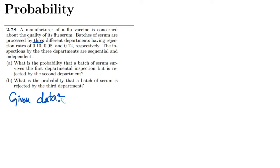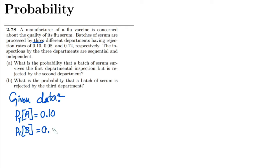The rejection rates for different departments — let me label them department A, B, and C. The probability of rejection for department A is 0.10, the rejection probability for department B is 0.08, and the rejection probability for department C is 0.12. So these are the rejection probabilities.